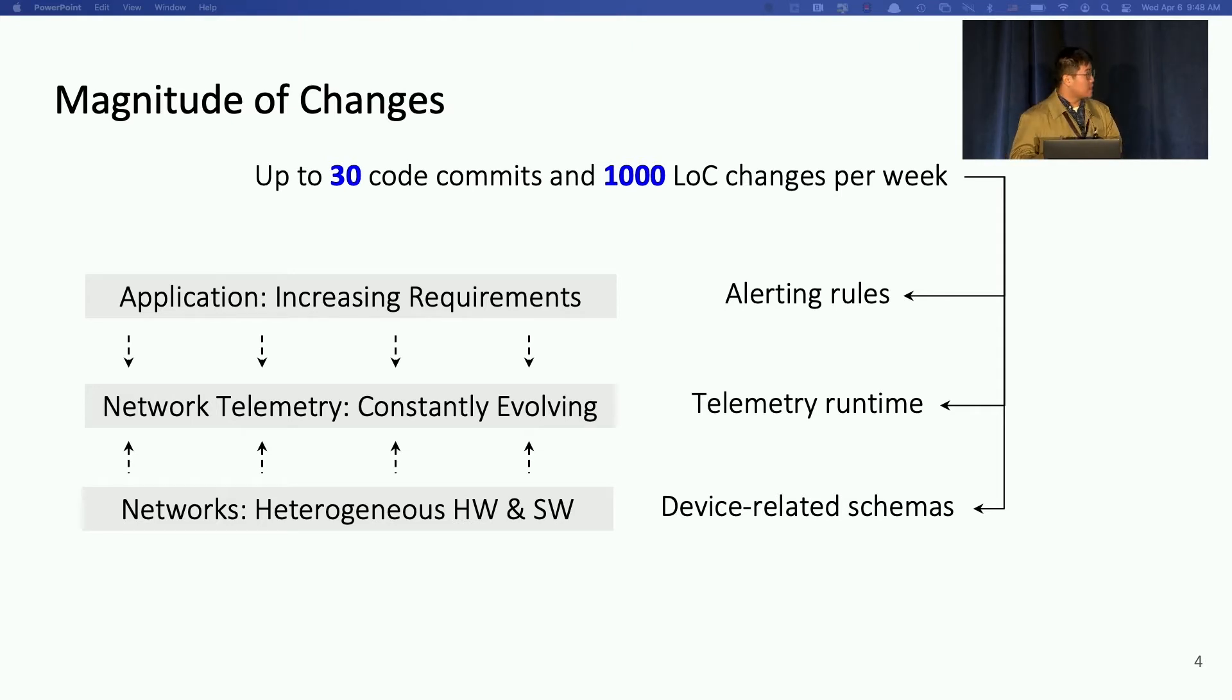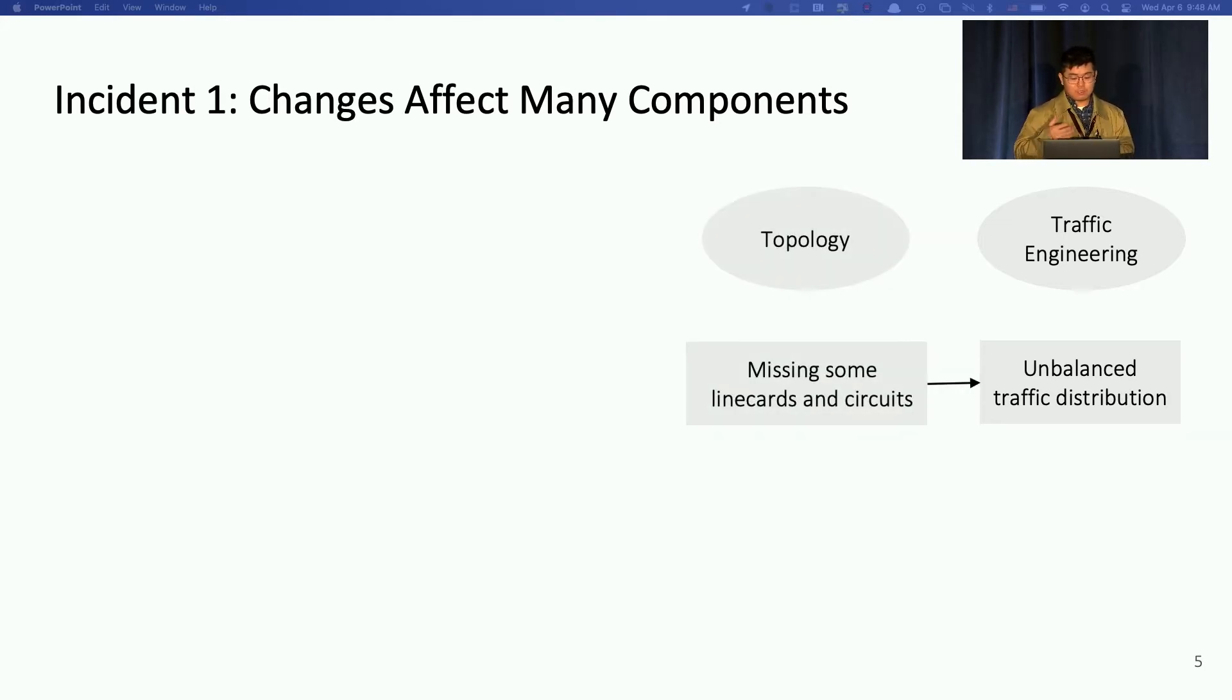I'm going to talk about two incidents we see in production and demonstrate challenges there. The first incident is from high level that we found that changes can sometimes affect many components that are loosely connected to the system. In this incident, the traffic engineering team see unbalanced traffic distribution for some switches. The problem is that the input topology misses some switch line cards and circuits.